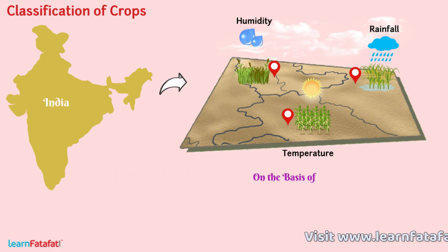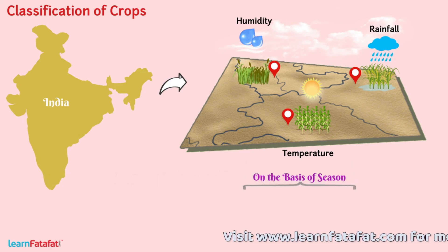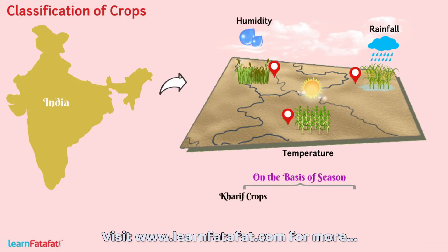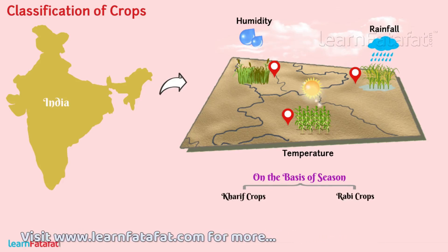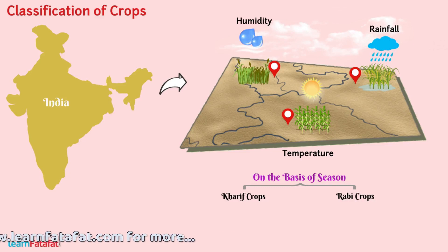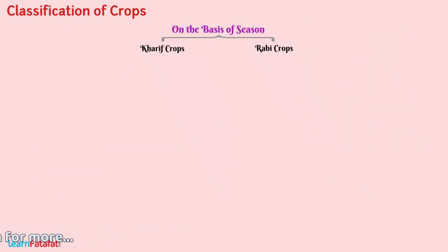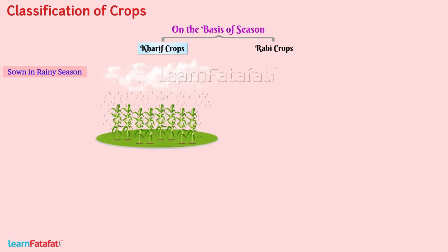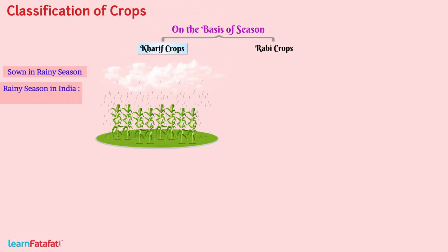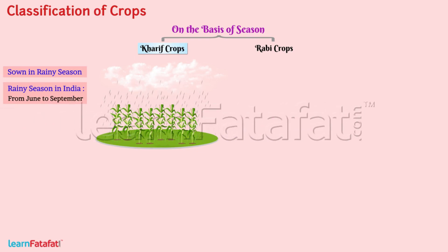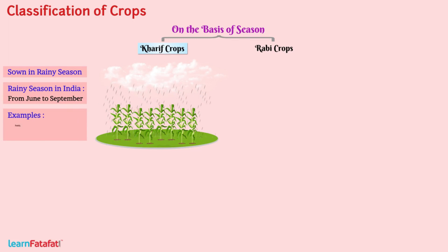Basically, on the basis of season, we can classify crops into two cropping patterns: Kharif crops and Rabi crops. The crops which are sown in the rainy season are called Kharif crops. In India, the rainy season is from June to September. Some of the Kharif crops are paddy, maize, soya bean, groundnut, cotton, etc.